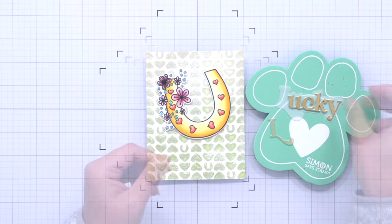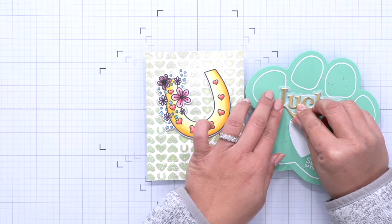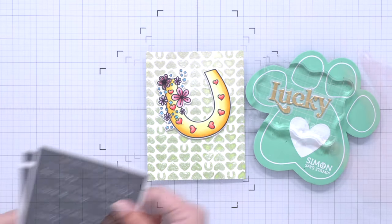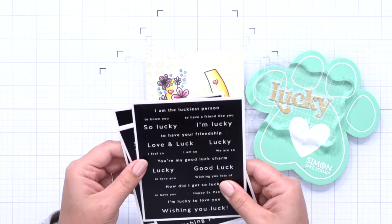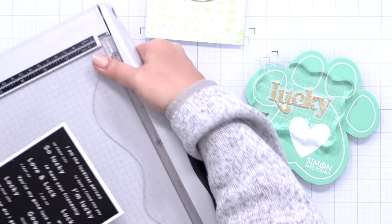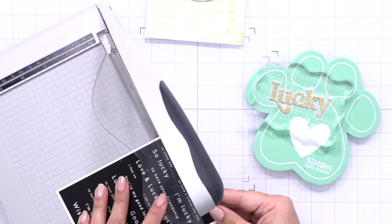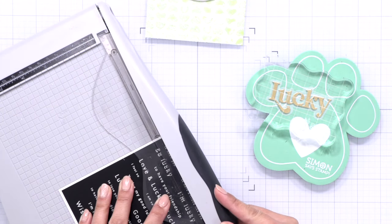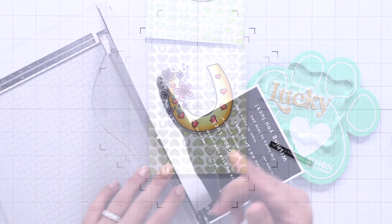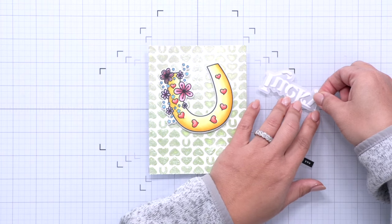Then I'm going to adhere it to a vellum shadow layer and I love vellum because I like that you can still see a bit of color in the background if you have a busy background going on and you don't want to take away too much from it but you still want to give your words a shadow.